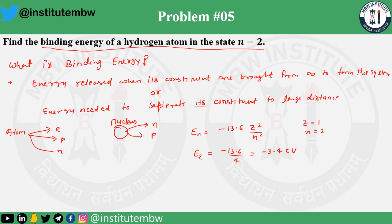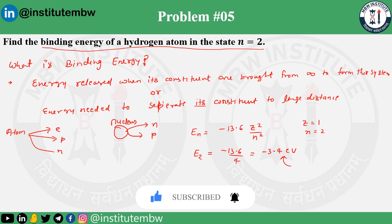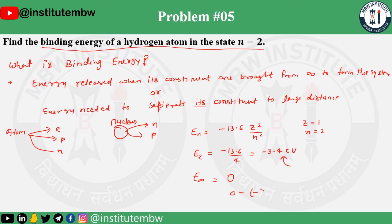Now what binding energy says: energy released when its constituents are brought from infinity to form the system, or energy needed to separate its constituents. The system is already there, so you have to separate them. To separate to a large distance — infinity — the energy at infinity when n is equal to infinity is 0. So the energy required is 0 minus (minus 3.4), that is 3.4 electron volts. That is your binding energy. Thank you.